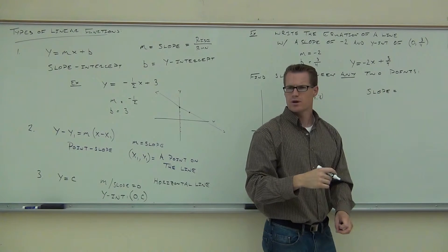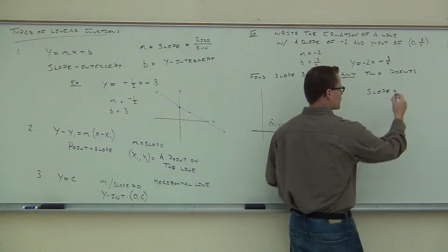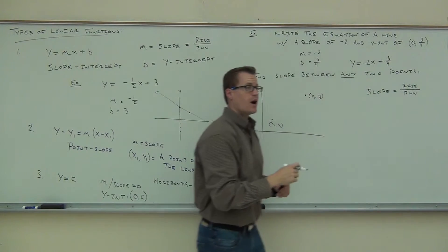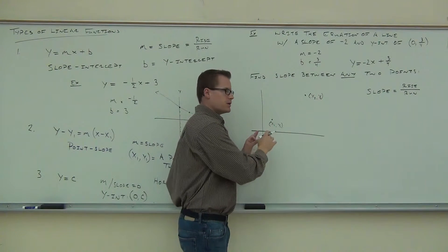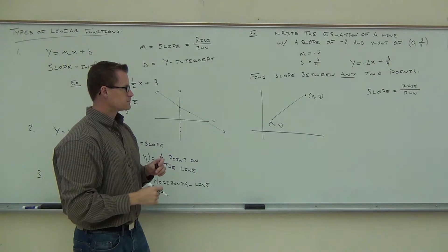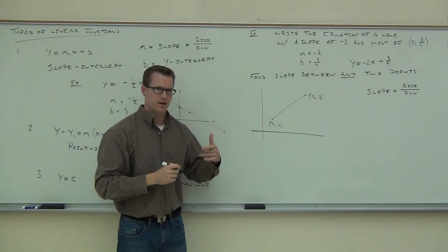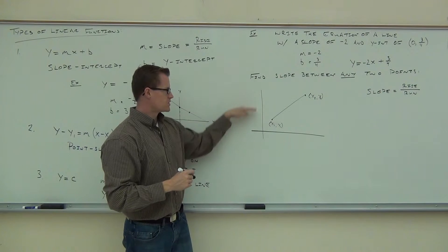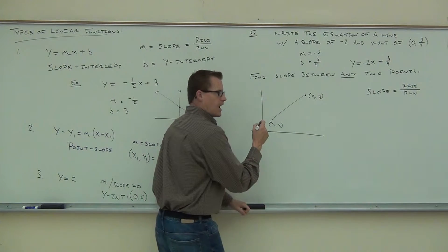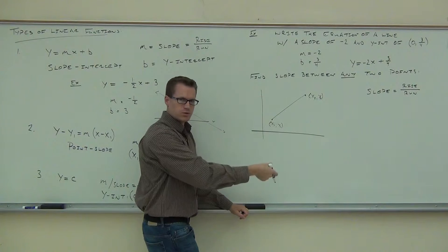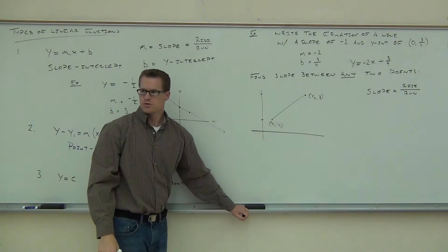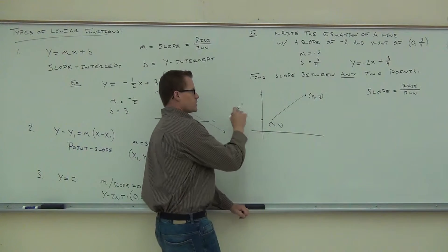What was slope again? Rise over run. So we need to somehow figure out the rise and the run between these two points. The rise is how much this line gains in altitude between this point here and this point up here — that's going to be our rise.